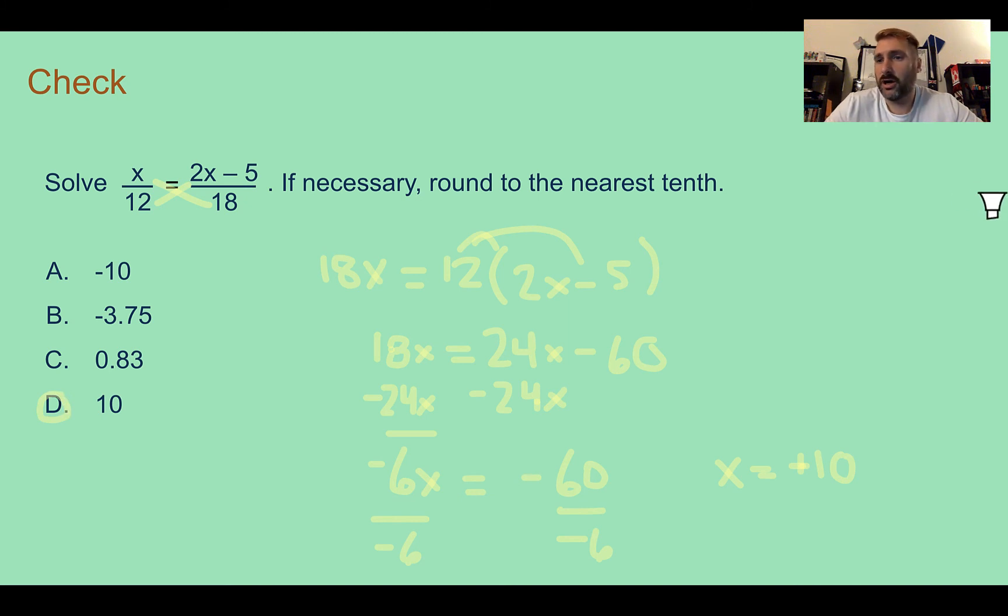If we got negative 10, we should always double check. So plugging in negative 10, we'd end up with negative 10 twelfths compared to negative 25 eighteenths. This fraction, negative 10 twelfths, the numerator is less than the denominator, so it's not even a whole. And then if we plugged in negative 10 here, we'd end up with negative 25 out of 18. So this left side would be less than 1. This side would be more than 1. Even without calculating it out, I can tell they're not the same. So A wouldn't have worked. Negative divided by negative is positive. And when we plug in positive 10, we end up with 10 twelfths equals 15 eighteenths. And those both do reduce to the same fraction of 5 over 6.